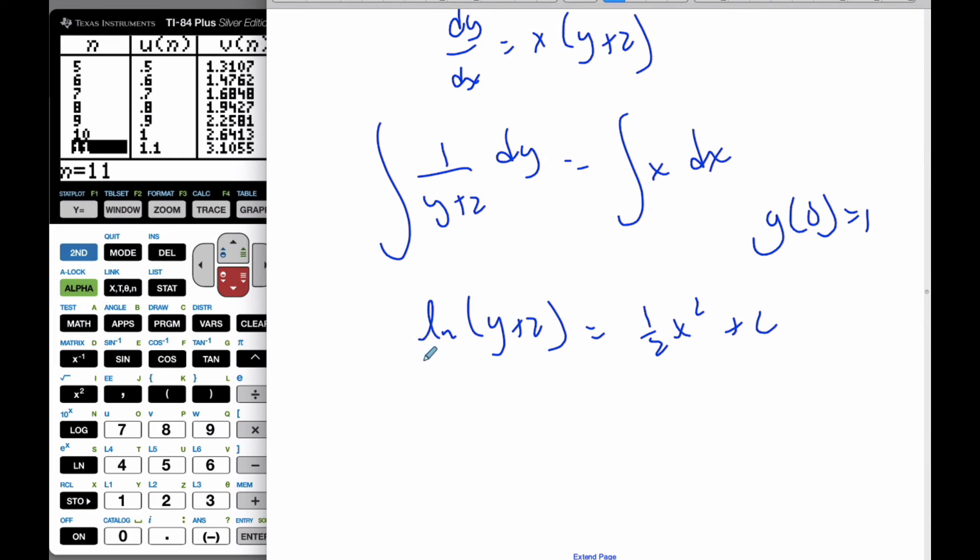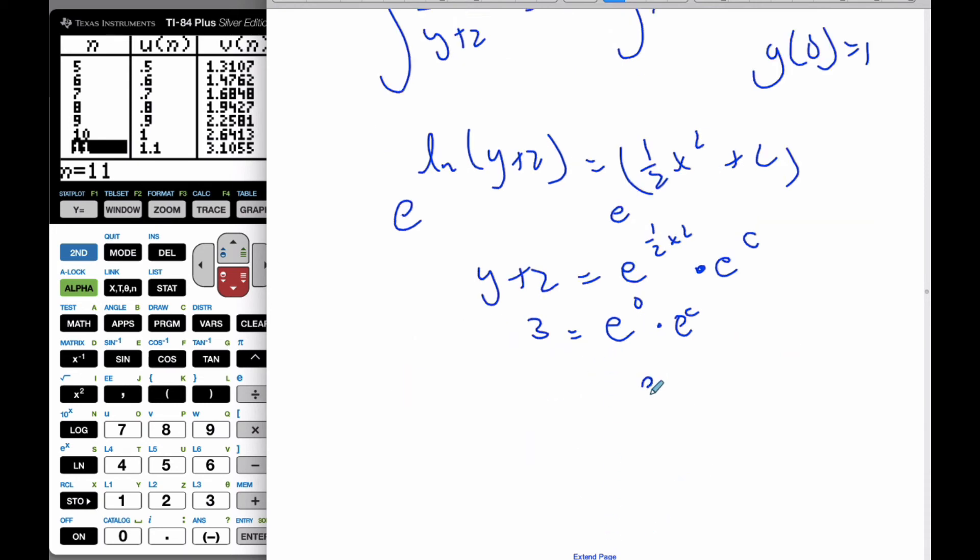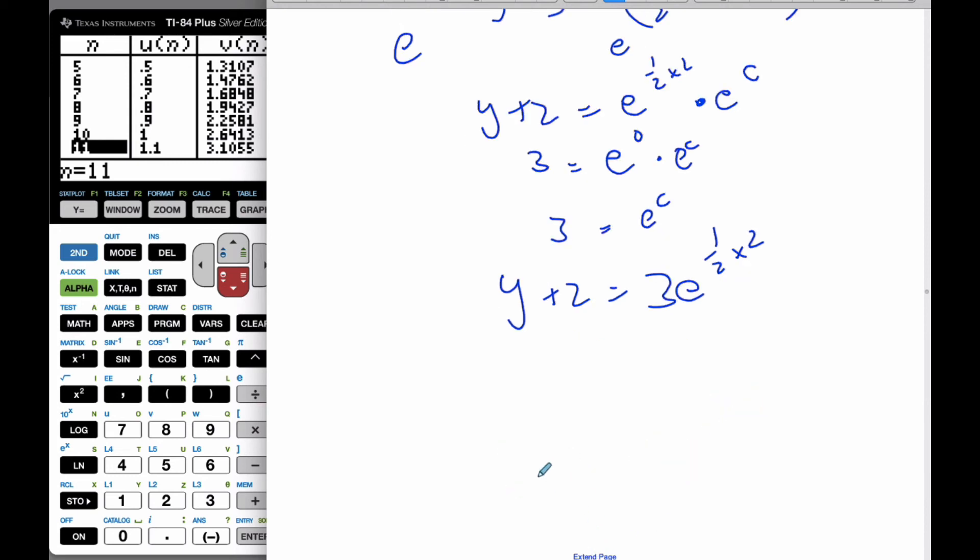And I know y at 0 equals 1. If I raise this to the power e and this to the power e, this is y plus 2 is equal to e to the half x squared times e to the c. Plugging in my values, I get y is 1, I get 3 is equal to e to the 0 times e to the c. And so e to the c is equal to 3. And so y plus 2 equals 3 e to the half x squared. And so y is equal to 3 e to the half x squared minus 2.